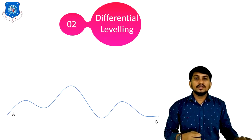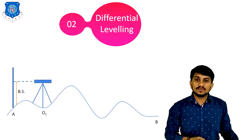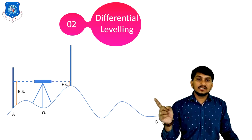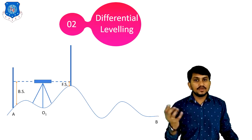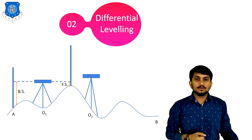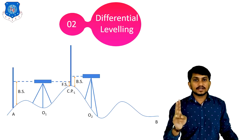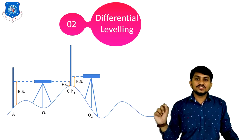A number of setups are required. Suppose this is the first setup O1; we will take the reading at station number A. The first reading taken is called BS. After that, we will find out the last reading of this setup, which is FS. After taking the last reading FS, we will move the instrument to the next setup O2 and take readings. The point where two staff readings are taken — FS for the first setup and BS for the second setup — this station is called the changing point. Here this is changing point 1.